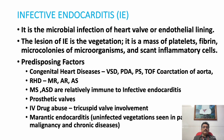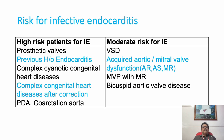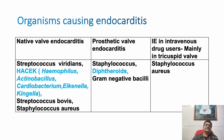The lesion in infective endocarditis is a vegetation — a mass containing platelets, fibrin, micro-colonies of microorganisms, and inflammatory tissue. High-risk patients include those with prosthetic valves, previous history of endocarditis, and complex cyanotic congenital heart disease. Moderate risk includes VSD, acquired aortic or mitral valve dysfunction, MVP with MR (MVP alone is not a risk factor), and bicuspid aortic valve associated with AS or AR.